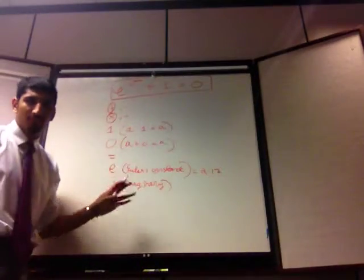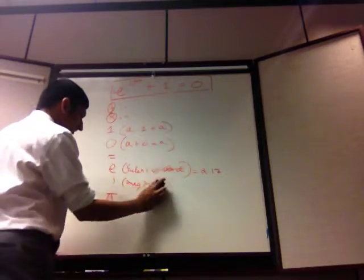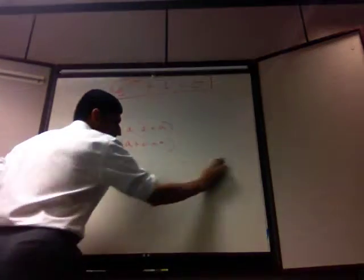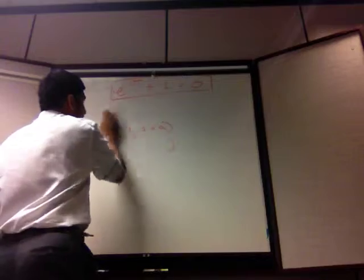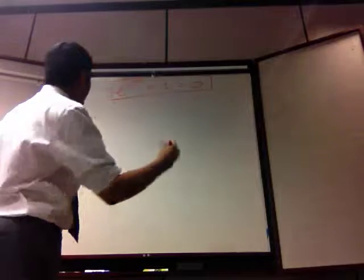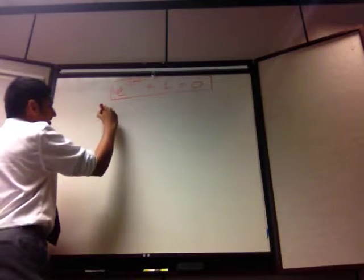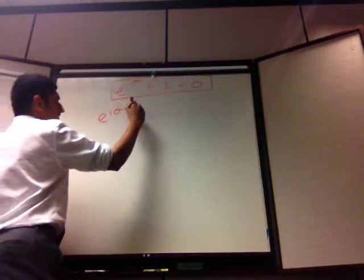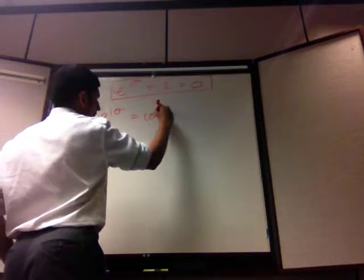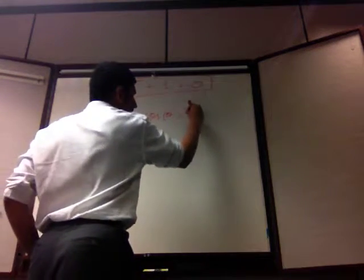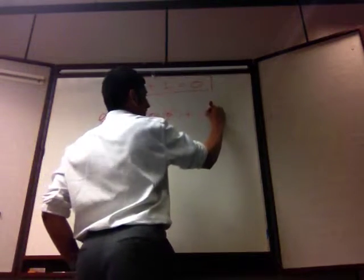I'm going to erase these, so I hope you've had a good chance to memorize them. Alright, so there's an identity, Euler's identity, that e to the i theta is equal to cos theta plus i sine theta.